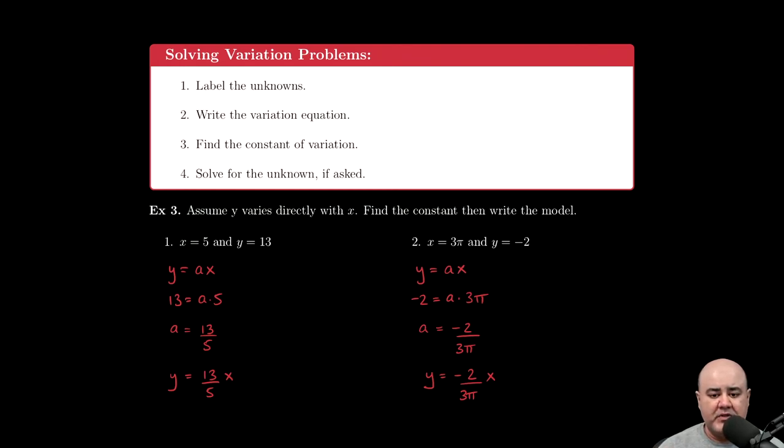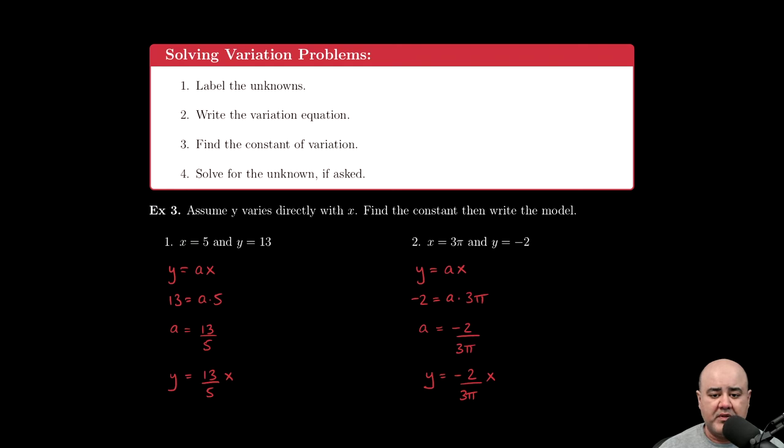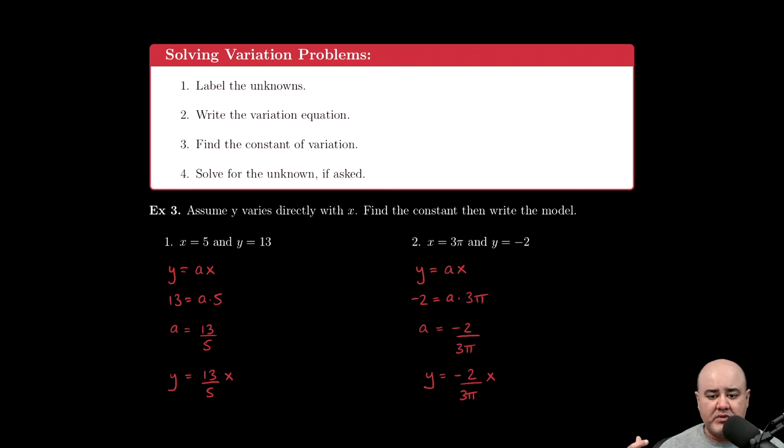The first thing you always want to do is list or label any unknowns. This will be especially important when we get to word problems or contextual-based problems where you're required to figure out what exactly you're finding in the context of the question, and then perhaps write a sentence at the end. So you always want to label your unknowns right at the top.